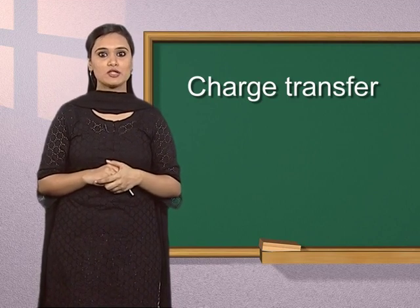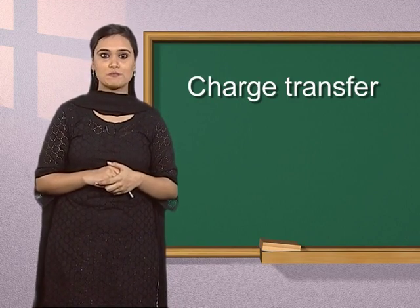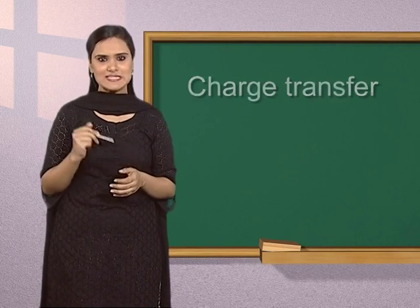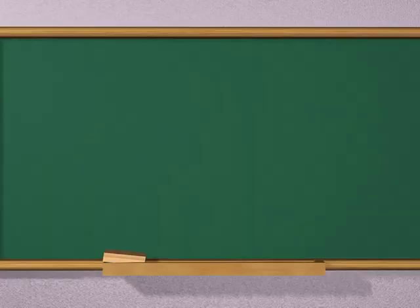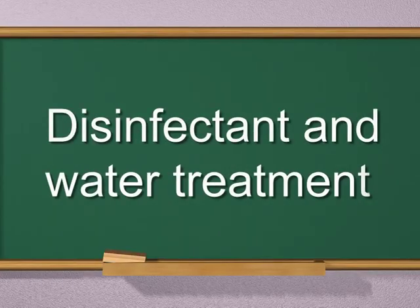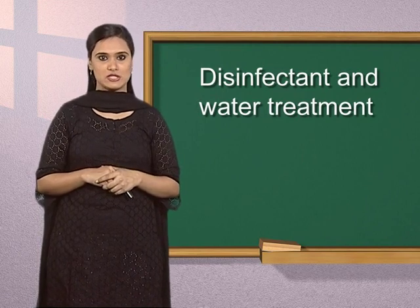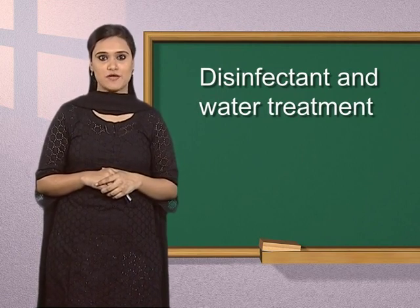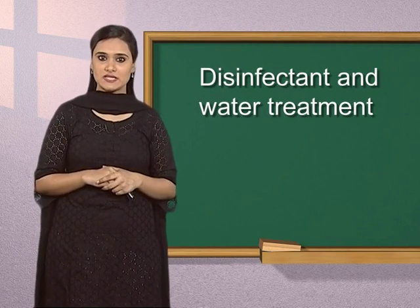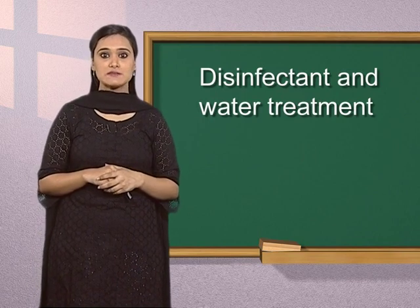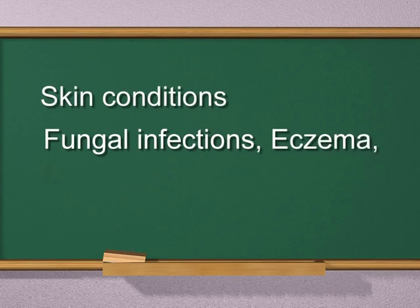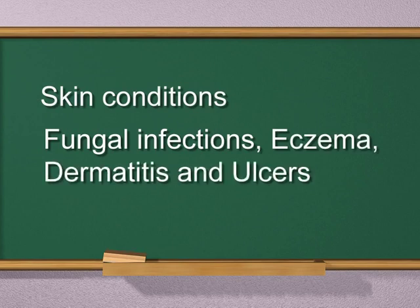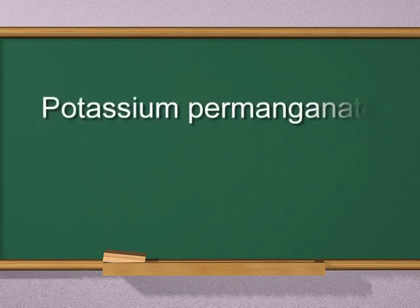After discussing the preparation and properties of potassium permanganate, let us discuss its uses in daily life. Disinfectant and water treatment: potassium permanganate solution is used to treat infections. When mixed with water, it helps in the treatment of skin conditions, fungal infections, eczema, dermatitis and ulcers. As an oxidant, potassium permanganate can act as an antiseptic.